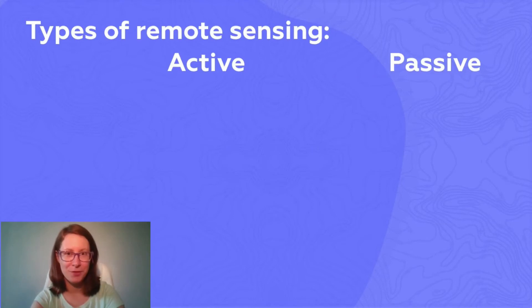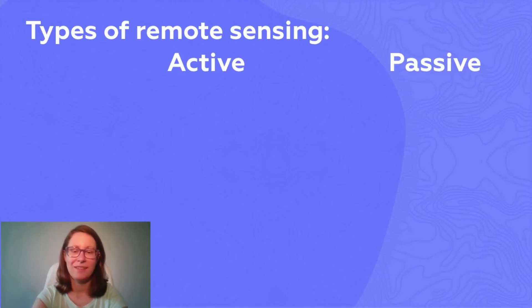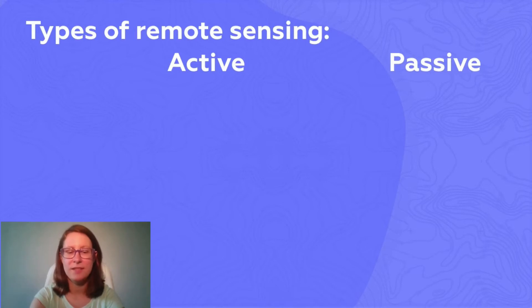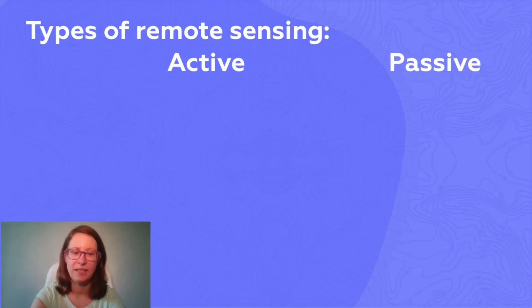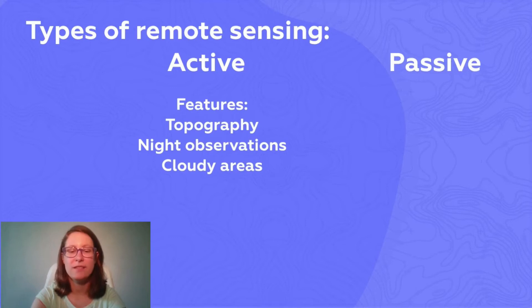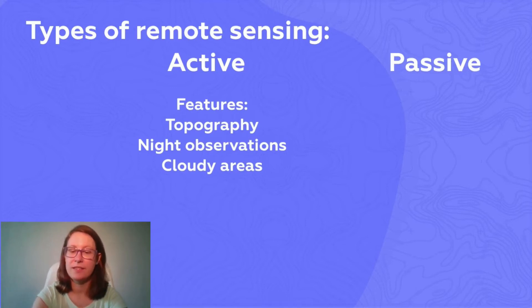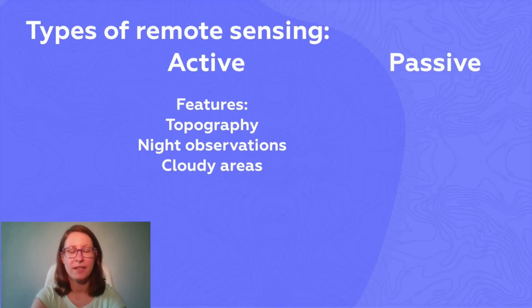Why is it important for us? These two types of remote sensing allow us to get different types of data. Active sensing allows us to get topography of the Earth's surface, and it is able to make measurements at night and see through the clouds.